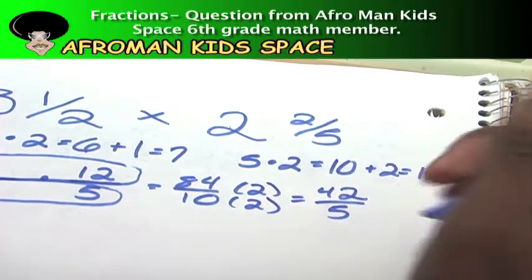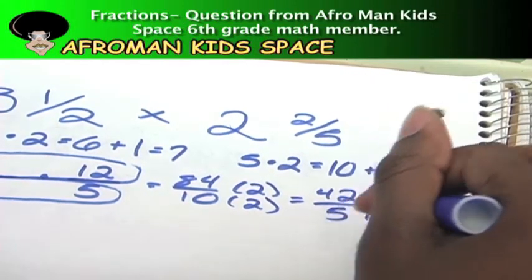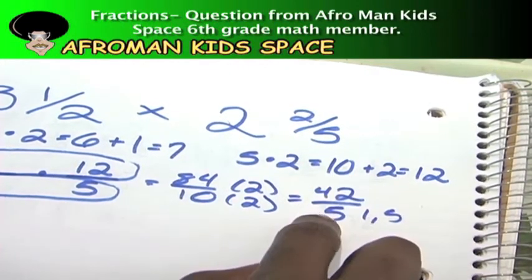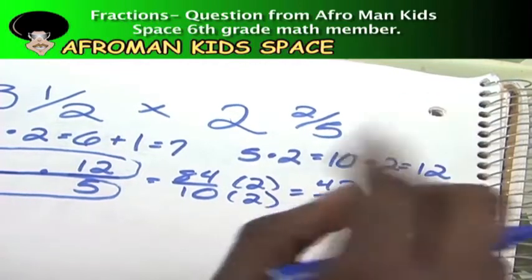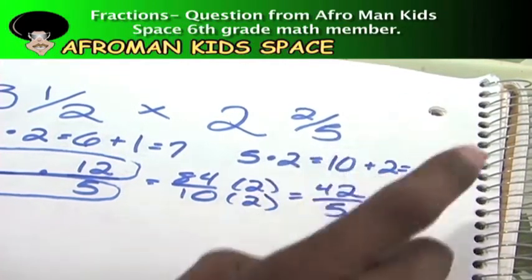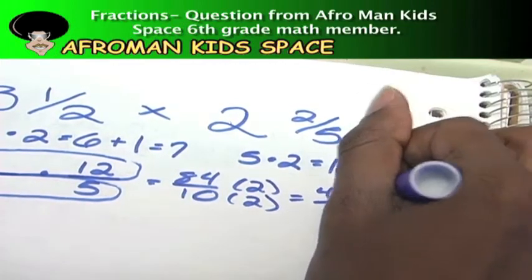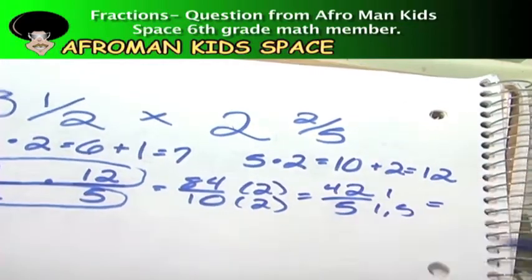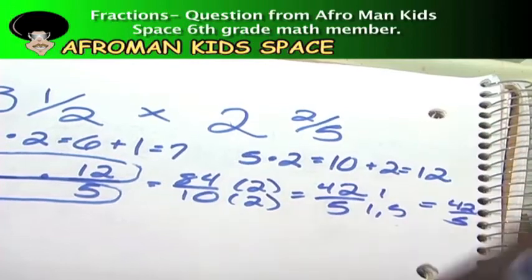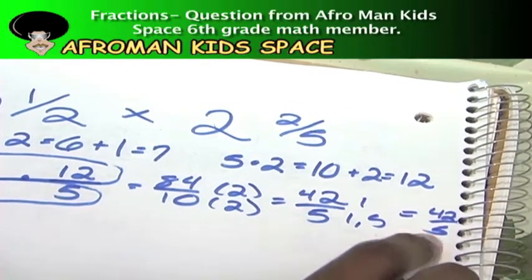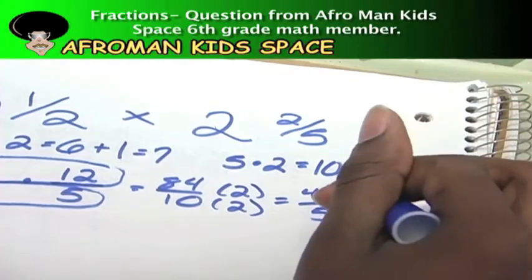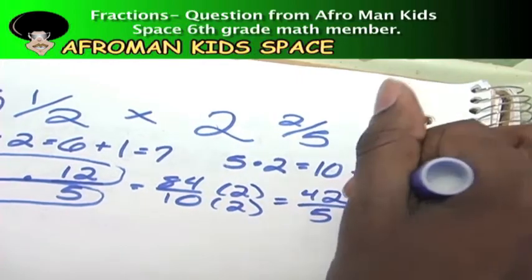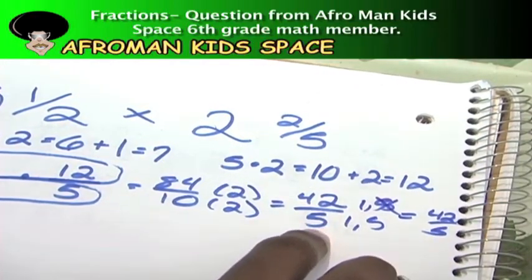I already know five can go into five only two numbers: one and five. Well, whatever numbers can go into the bottom, it has to go into the top too, or vice versa. Whatever numbers you put into the top has to be able to go into the bottom. Well, I know one can go into 42, however if I use one for the top and the bottom, all it's going to give me is 42 over 5, which is the same thing that we started with. The only other number that the bottom number has is the 5, and can 5 go into 42? No. So that means that 42/5 is our lowest fraction.